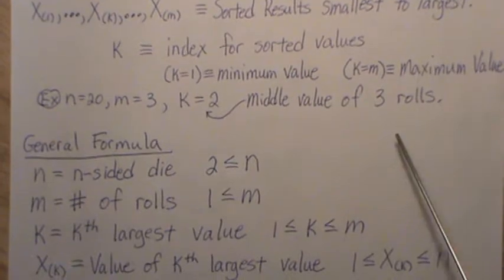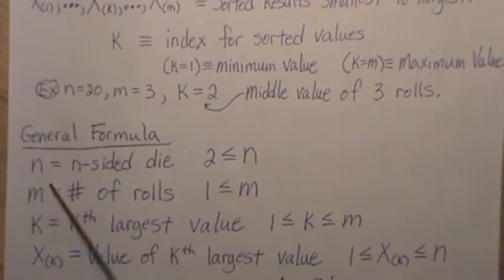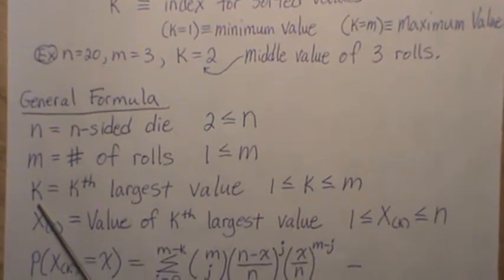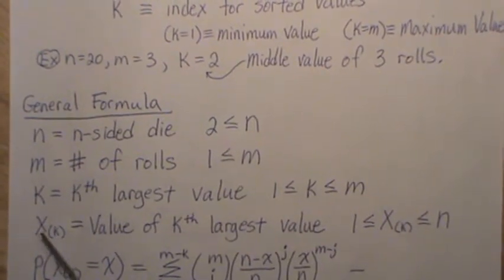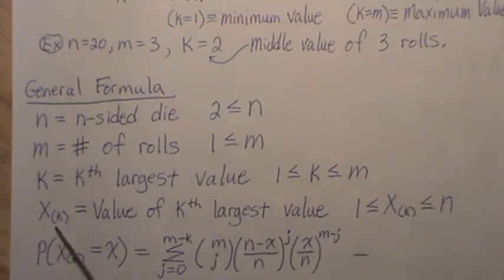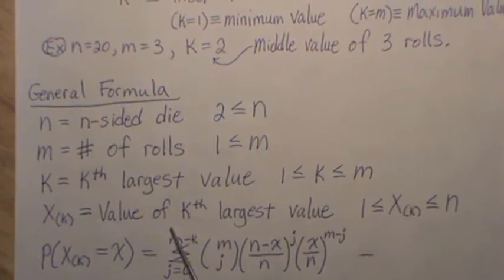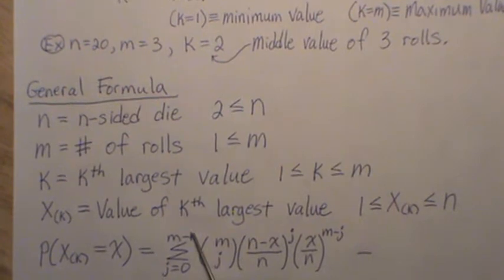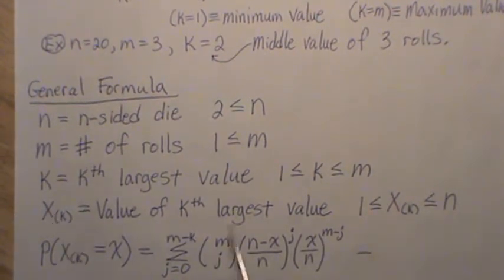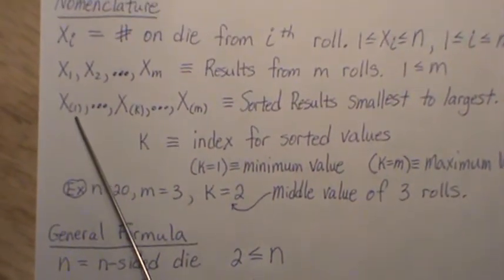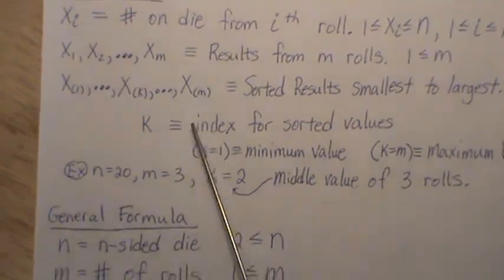So here's the general formula. n represents the n-sided die, m is the number of rolls, k is the kth largest value. x sub parentheses k, that's the value of the kth largest value. And of course, these values go from 1 to n, but it's sorted. Remember that x(k), they're sorted from smallest to largest.